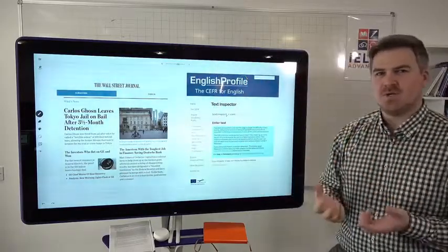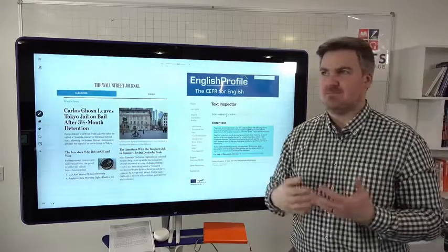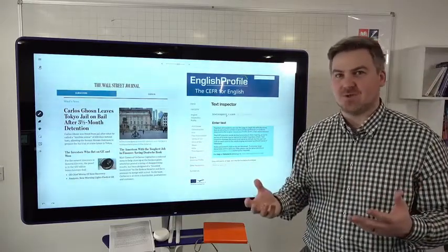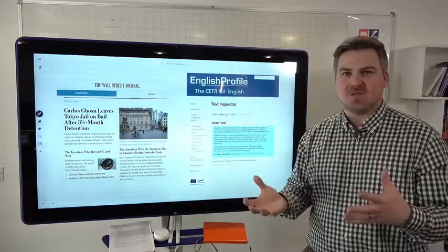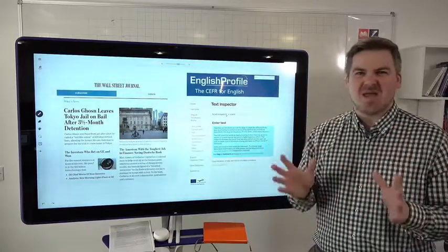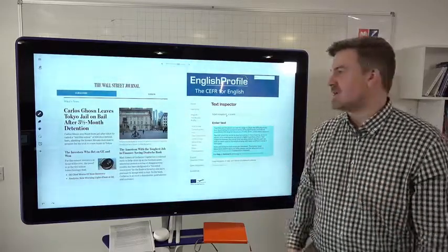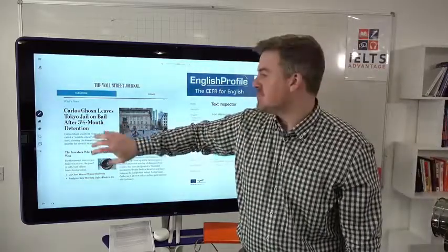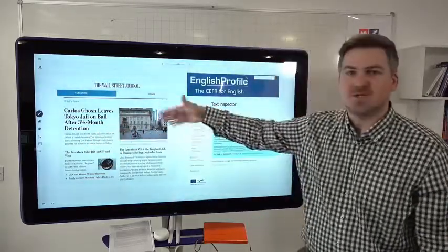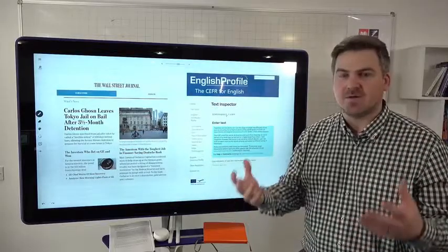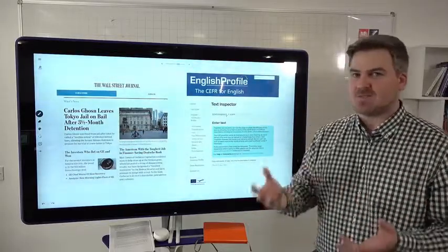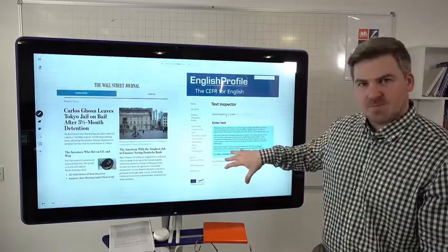So you would think that really good writing means that there are lots of C1 and C2 words and quite a few B1 and B2 words and not many A1 and A2 words because they're simple, right? So what I did was just take a random article from the Wall Street Journal, and the Wall Street Journal is quite highbrow, the vocabulary in it is quite specific, it's quite high level, and put it in here.